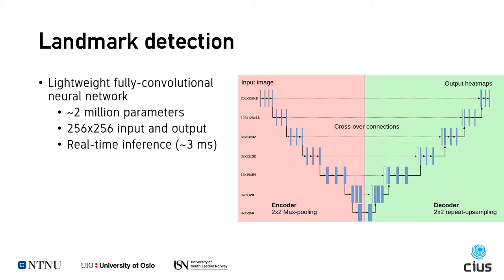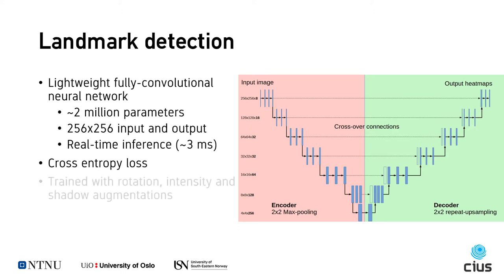The input image size and the output heatmap size is 256×256 pixels. This network is optimized for real-time inference and can be executed in only a few milliseconds on a modern GPU. The cross-entropy loss function was used for training, and to reduce overfitting, the network was trained with several augmentations such as rotation, intensity, and shadows.